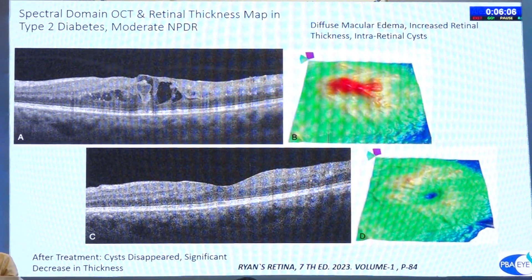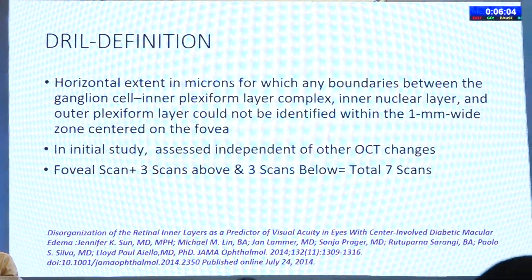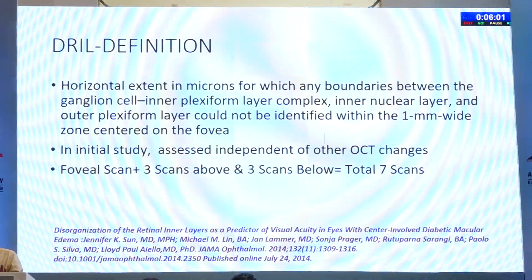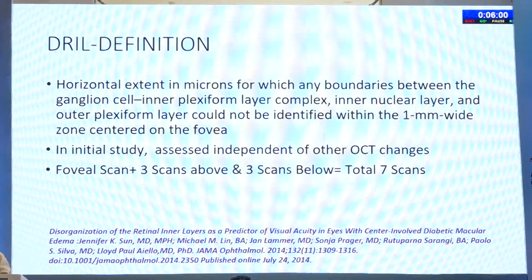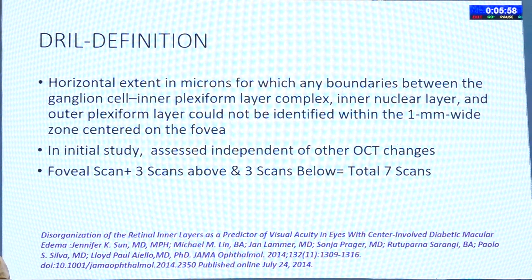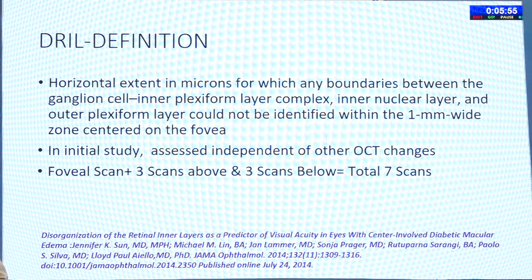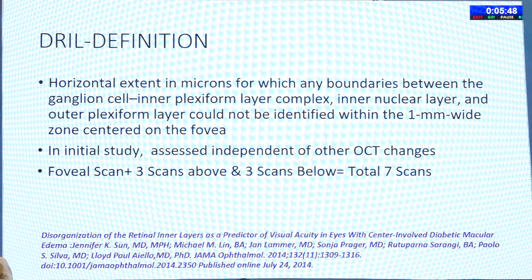Some of the hyperreflective foci also disappeared. Then we come to DRIL — disorganization of retinal inner layers — a horizontal extent in microns where any boundaries between the ganglion cell inner plexiform layer complex, inner nuclear layer, and outer plexiform layer cannot be identified within the one-millimeter-wide zone centered on the fovea.